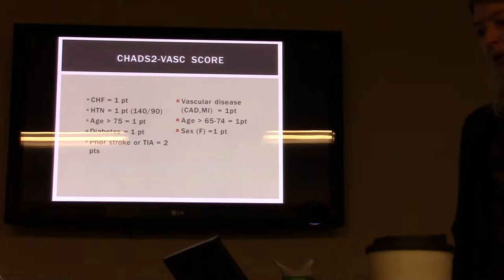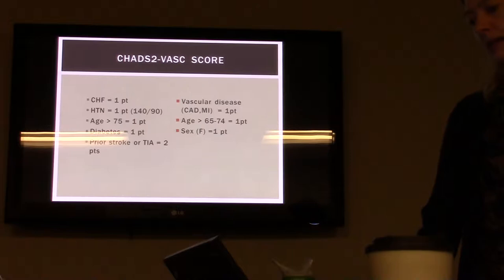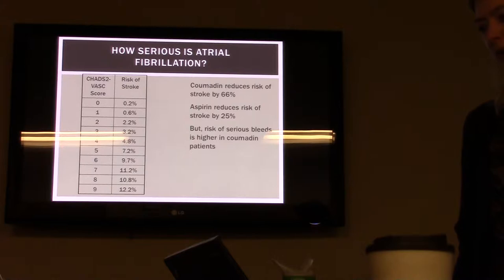For each factor you get one point, except for a prior stroke or TIA, which is two points. CHF is one point, hypertension is one point, age above 75 is one point — and they get an additional point from age 65 to 74, so really if they're over 75 it's like two points. If they're female that's one point as well, so there's a maximum of nine points. Once we have a score of about two, that's when we decide the patient would probably benefit from anticoagulation because of the risk of stroke.